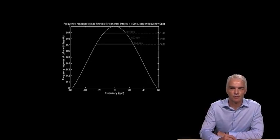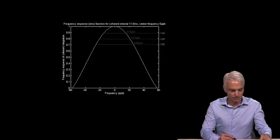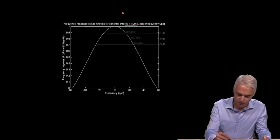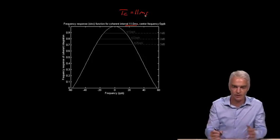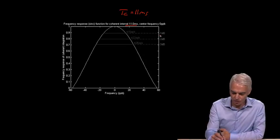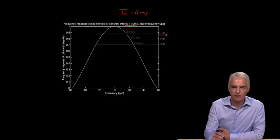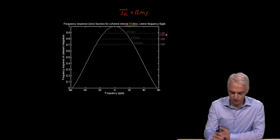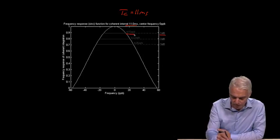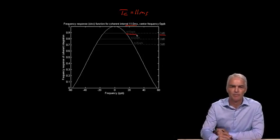This is what the sinc function looks like with 11 millisecond coherent interval. This is Tc equals 11 millisecond. You'll see the shape looks exactly the same because we've just scaled the axis. Instead of going down to 1 dB at plus or minus 250 hertz, it's more like 20 hertz or in parts per billion, it's plus or minus 15 PPB. That's quite narrow.